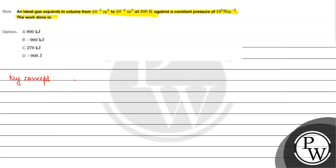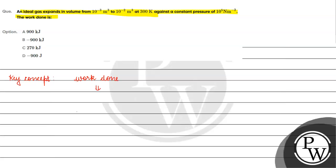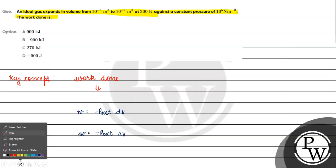The key concept for this question is work done. The basic formula we have is: work is equal to minus P external dV, or we can write W equals minus P external into delta V, where P external is the external pressure.